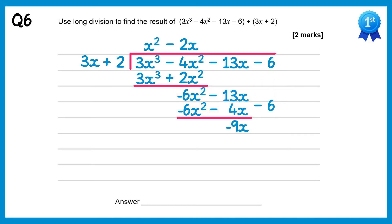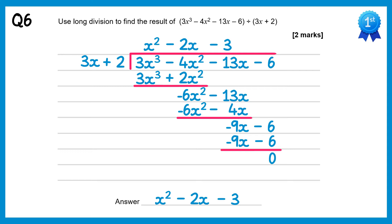Bring down the next term. Negative 9x divided by 3x gives you negative 3. Multiply back through: negative 3 times 3x is negative 9x, negative 3 times positive 2 is negative 6. Subtract these and you get 0. And there's our final answer: x squared take 2x take 3.